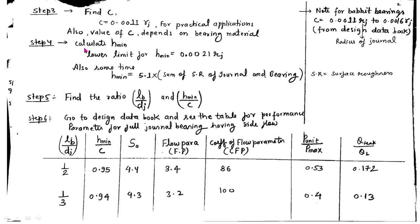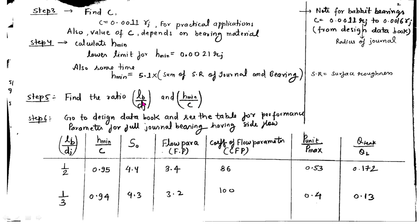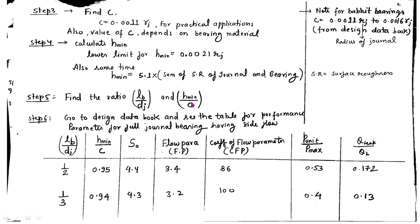Step number five: the value of minimum fluid film thickness h_min can be found using the given relation. Once h_min is found, calculate the L/D ratio and the h_min/c ratio. The L/D ratio is taken from the value assumed in step one, and the h_min/c ratio is calculated using the values of h_min and c obtained from the previous steps.